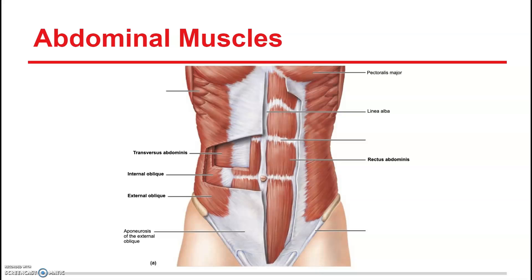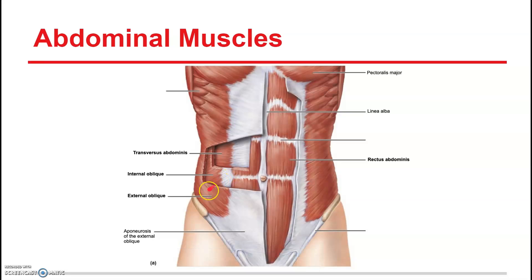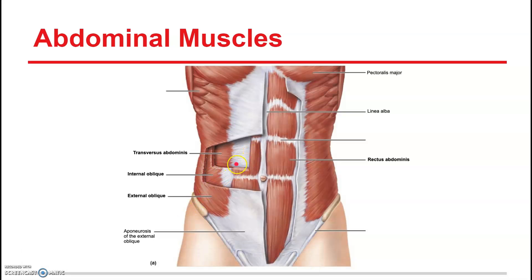Other than the rectus abdominis, we have three layers of muscles in this area of the abdomen. On the outside we have the external obliques — the fibers move inferior and toward the pubic region. The internal obliques, the next layer in, have diagonal fibers moving toward the sternum in the direction of the opposite shoulder. Then we have the transverse abdominis, whose fibers are horizontal — you can imagine it as a really thick belt around your abdomen. So from superficial to deep: external oblique, internal oblique, transverse abdominis.